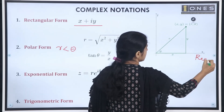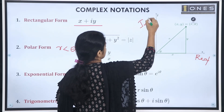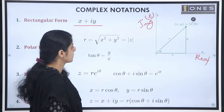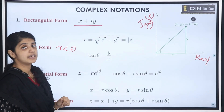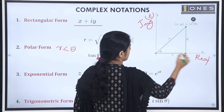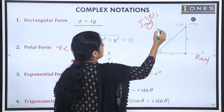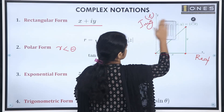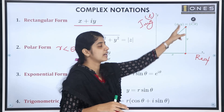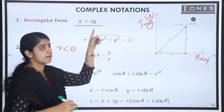Let's do these representations. The x-axis is the real axis, and the y-axis is the imaginary axis. For x plus iy, x is plotted on the x-axis and y is plotted on the y-axis. So the point (x, y) represents x plus iy on the complex plane.